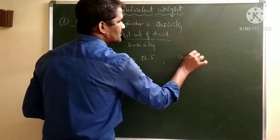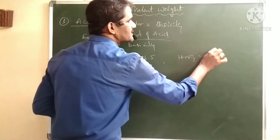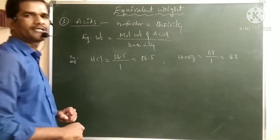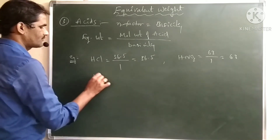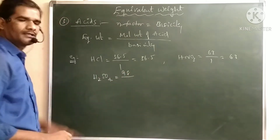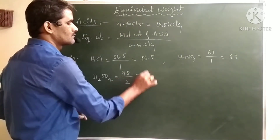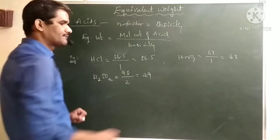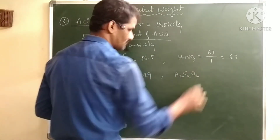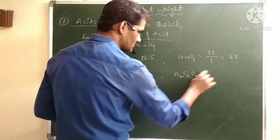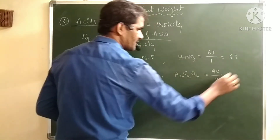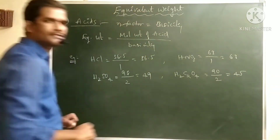For HNO₃, molecular weight is 63 and n-factor is 1, so equivalent weight is 63. For H₂SO₄, molecular weight is 98 and n-factor is 2, giving equivalent weight 49. For oxalic acid, molecular weight is 90 and n-factor is 2, giving equivalent weight 45.